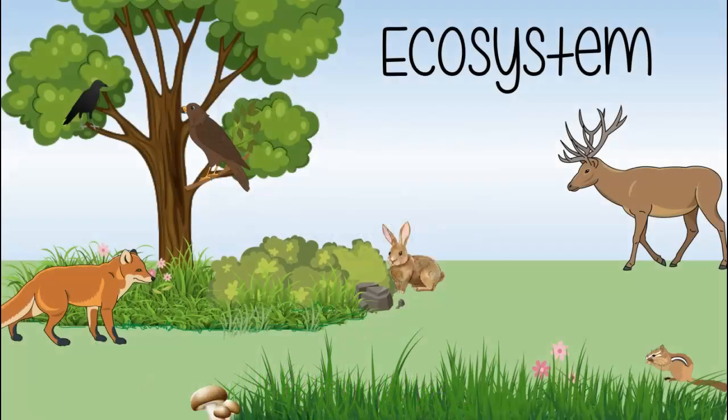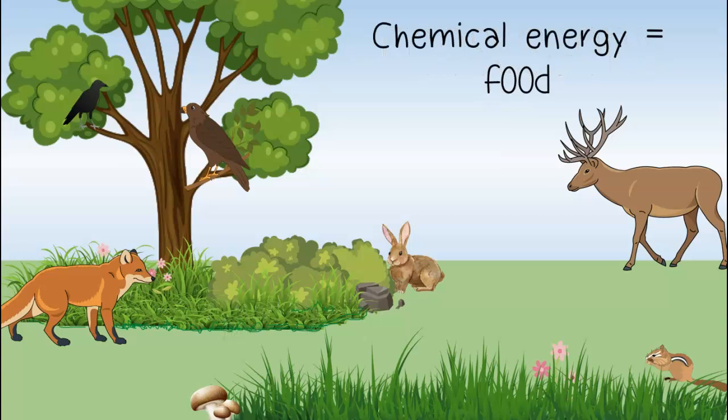Here we have a field ecosystem made of biotic and abiotic factors. The biotic factors in an ecosystem can be classified according to how they obtain chemical energy. Chemical energy is just a fancy name for food.